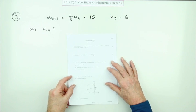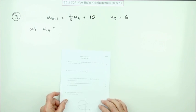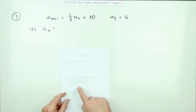Question 3 then from the 2016 Higher Maths Paper 1, recurrence relation, four marks this time. Three little parts, one, one and two.